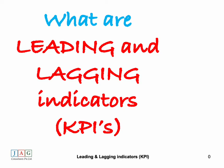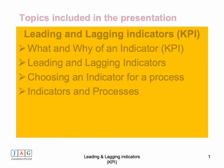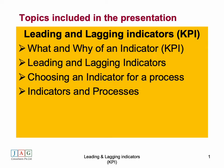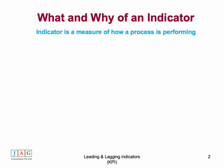Welcome to channel 16. In this session we're going to talk about leading and lagging indicators, what is commonly known as key performance indicators. We're going to look into four important things: what and why of an indicator, what are leading and lagging indicators and their importance, choosing an indicator for a process, and we'll also discuss some examples of indicators and processes so that you can work on similar indicators in your organization.